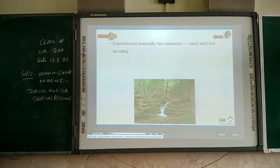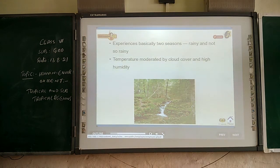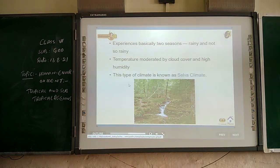The Amazon basin has basically two seasons: a rainy season and a not-so-rainy season. Temperature is moderated by cloud cover and high humidity. This type of climate is known as the equatorial climate.